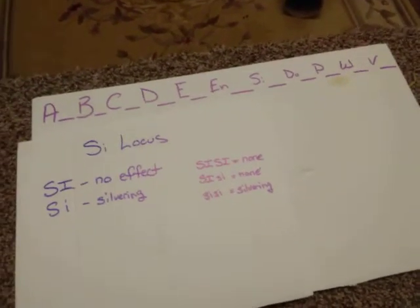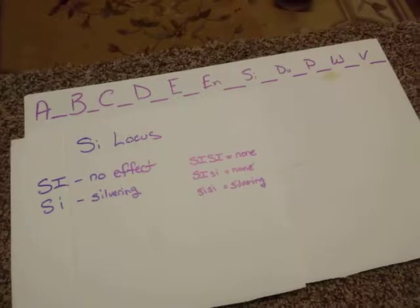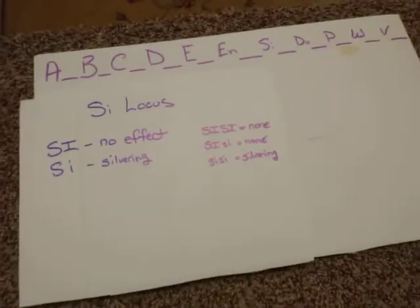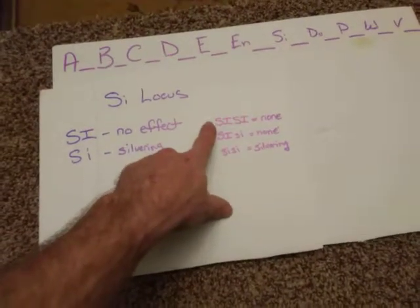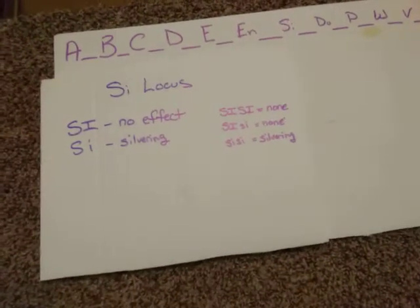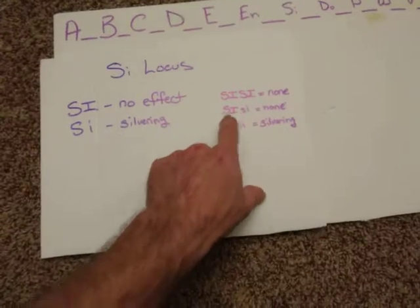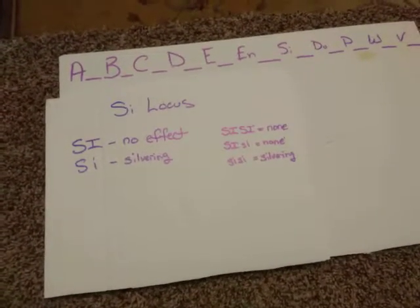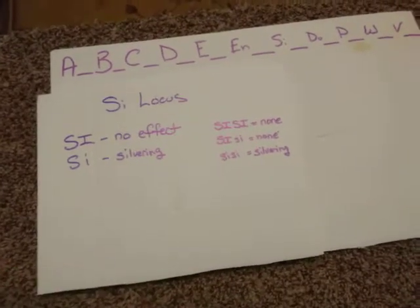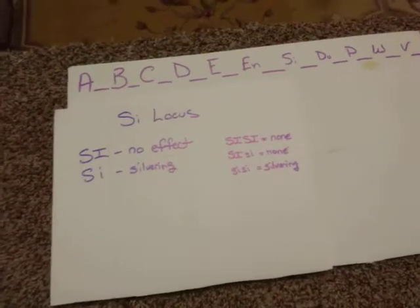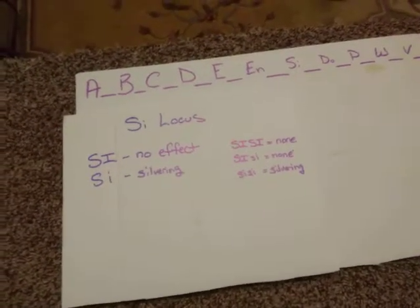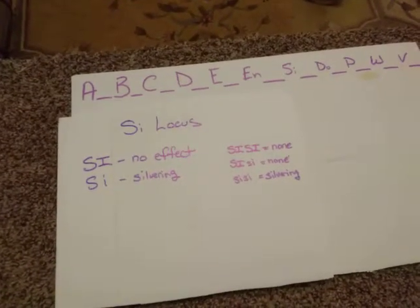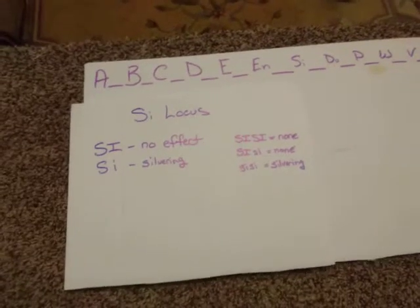We only have two combinations for silver ring to be presented or not, but three different combinations of alleles. We could have two capital SI's, we're not going to get any silver ring out of that. We could get a capital SI and a lowercase si, we're still not going to get any silver ring because dominant alleles at each locus point are going to be what actually modifies or changes the color of the rabbit. Recessive will not present.